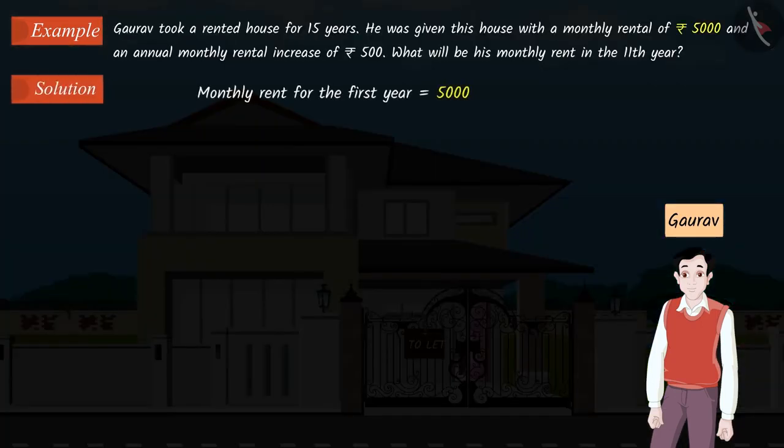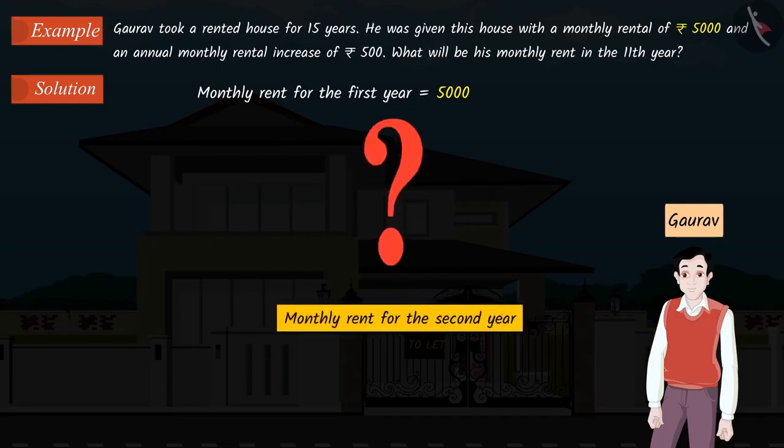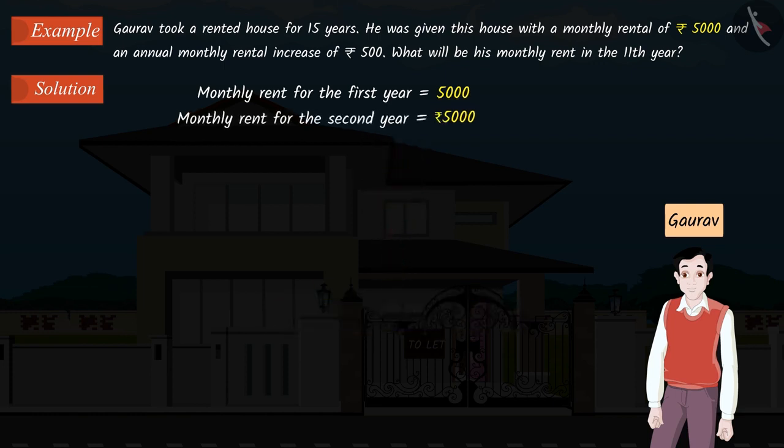The monthly rent for the first year will be Rs. 5000. Can you find the monthly rent for the second year? Well done! It is very easy. We just have to add the annual increase to the monthly rent for the first year. Hence, the monthly rent for the second year will be Rs. 5500.